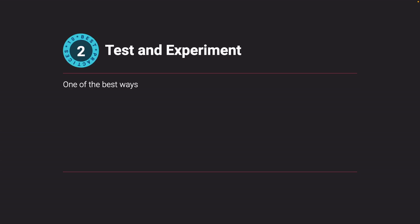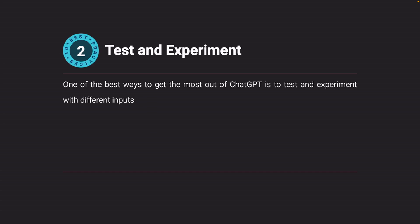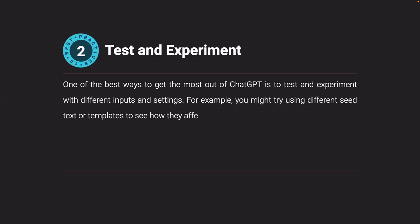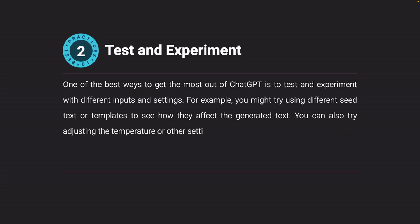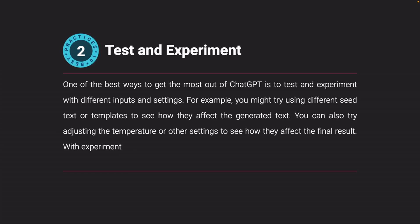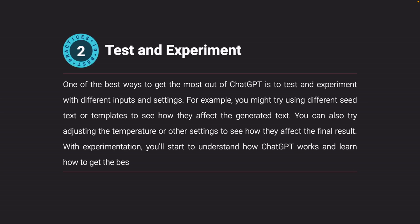Test and experiment. One of the best ways to get the most out of ChatGPT is to test and experiment with different inputs and settings. For example, you might try using different seed text or templates to see how they affect the final result. With experimentation, you'll start to understand how ChatGPT works and learn how to get the best results for your blog posts.